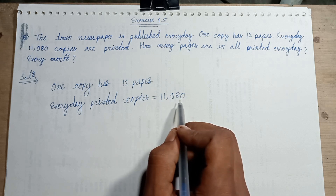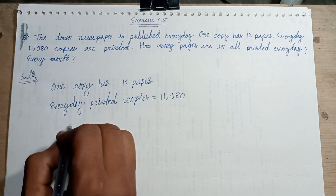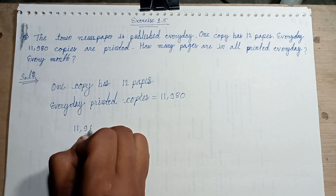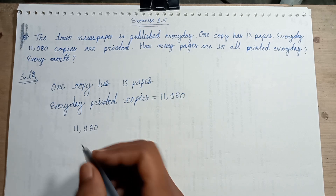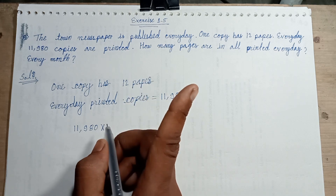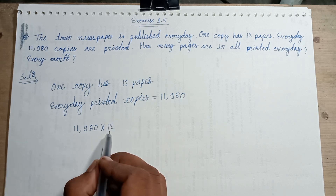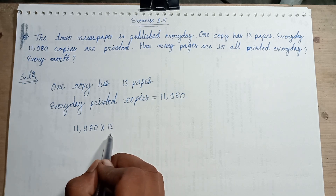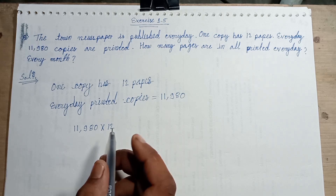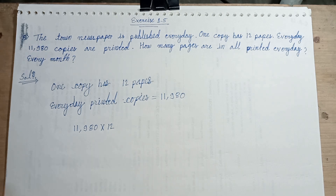Copies printed every day: 11,980. Every day printed, one copy is 12 pages. This number multiplied gives the total number of pages in every day. Let's solve this question.